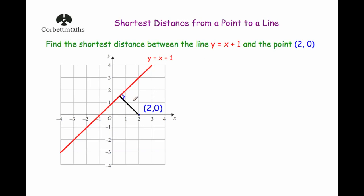So if we want to find the shortest distance from a point to a line there are three steps we've got to follow. Number one, find the equation of the perpendicular line to the line given that passes through the point given in the question. Step two, find where the given line and your perpendicular line intersect and find the coordinates of that point. The last step is to use Pythagoras to find the length of this diagonal, because you've got a right angle triangle, and that will be the shortest distance from the point to the line.